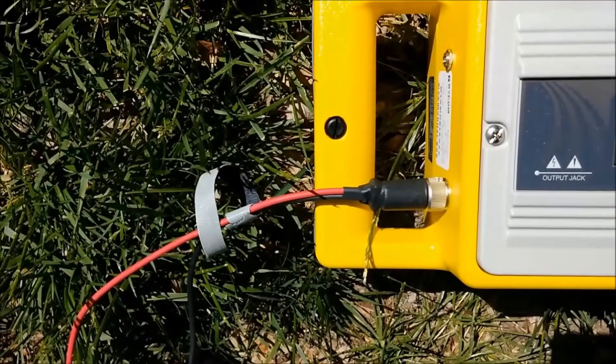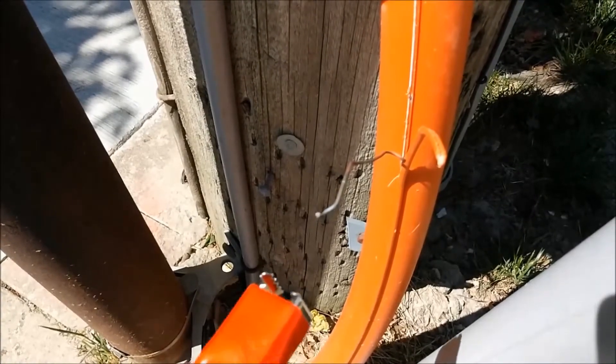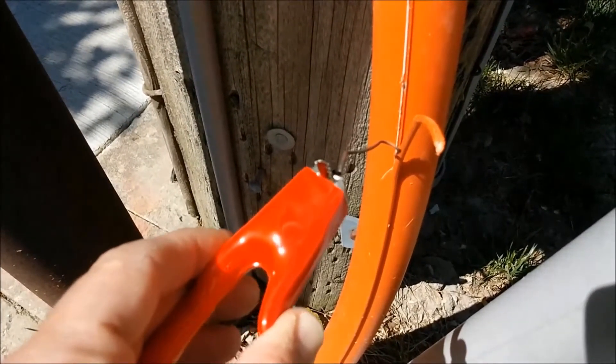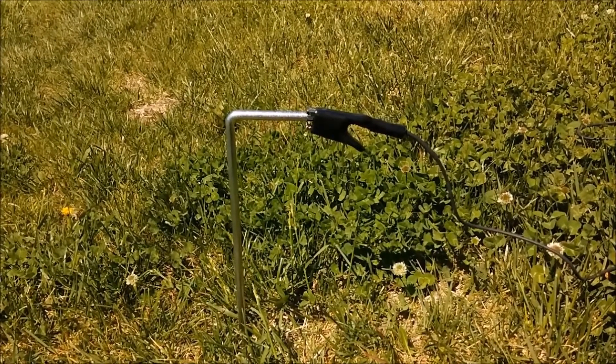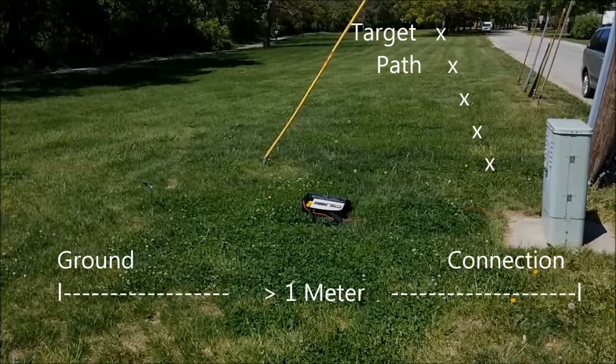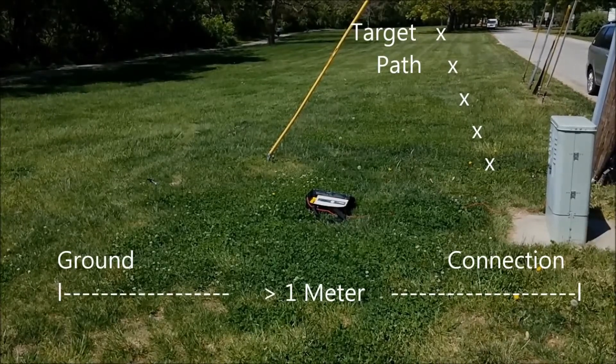To perform a direct connection, plug the red and black cord into the output jack of the transmitter. Connect the red clip to a conductive part of the target utility. Connect the black clip to an independent ground rod placed at least one meter from the connection point and at a 90 degree angle to the path of the target conductor.